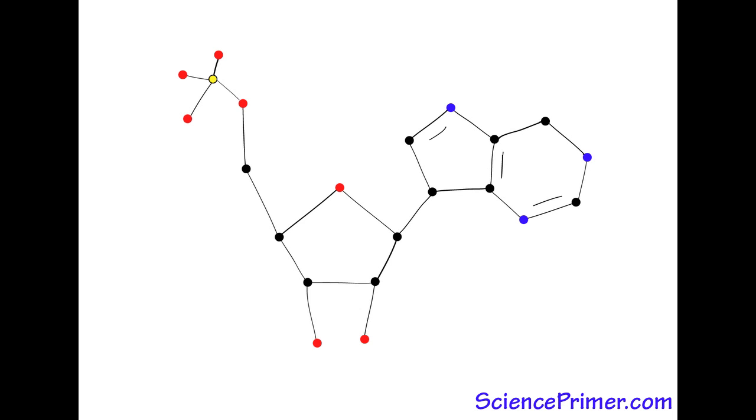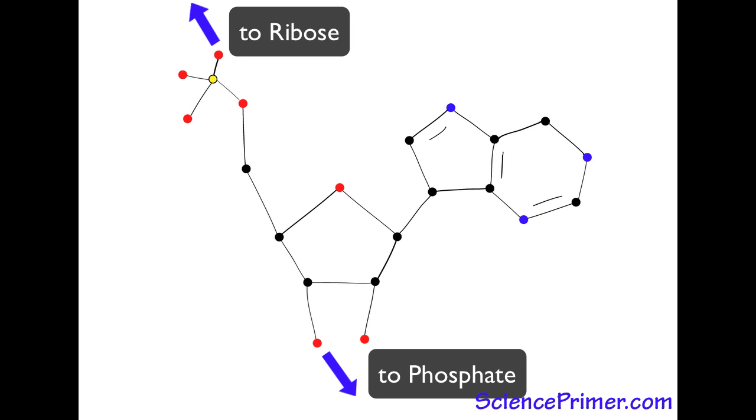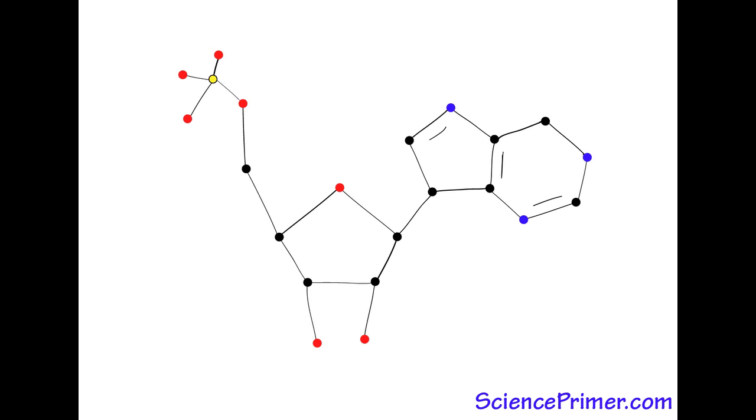Also like DNA, RNA nucleotides form polymers of alternating ribose and phosphate subunits linked by phosphodiester bridges between the number 3 and number 5 carbons on neighboring ribose molecules.